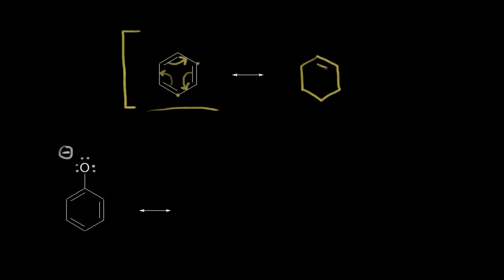The electrons moved over to here, to here, and then finally to here. Let's follow those electrons — the ones on the top left in red move over to here, the electrons in green move down to here, and then the electrons in blue move over to here.